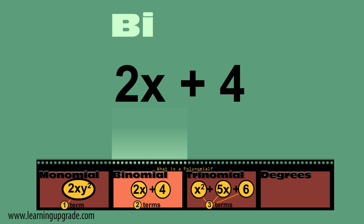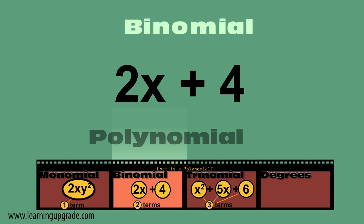What's a binomial? It's a polynomial with two terms. 2x plus 4, two terms. A binomial.